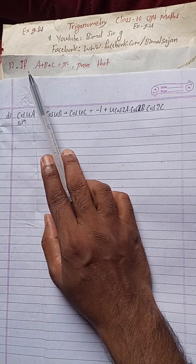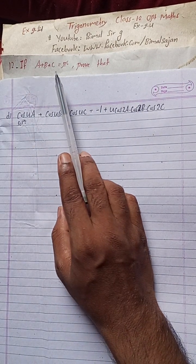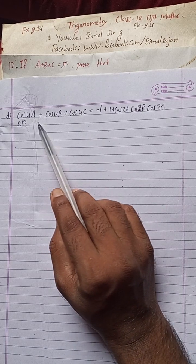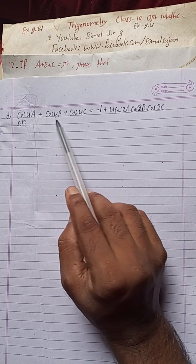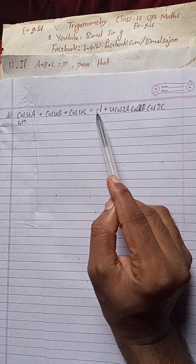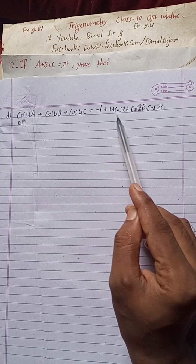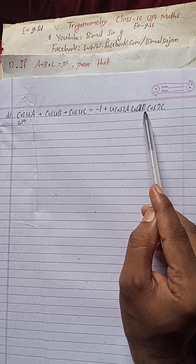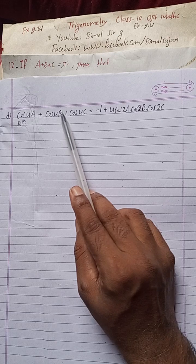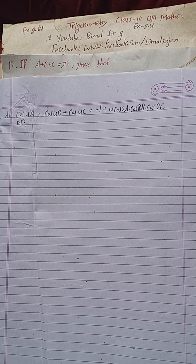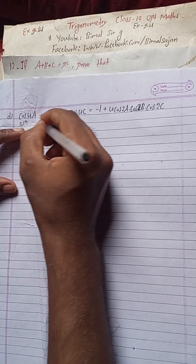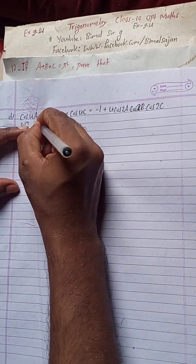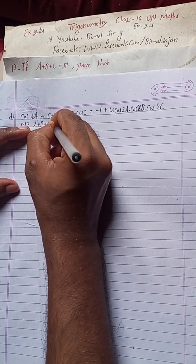Let's begin the solution. Question 12 states: if a plus b plus c is equal to pi radian, prove that cos 4a plus cos 4b plus cos 4c is equal to minus 1 plus 4 cos 2a into cos 2b into cos 2c. Now for the solution, we are given a plus b plus c equals pi radian.